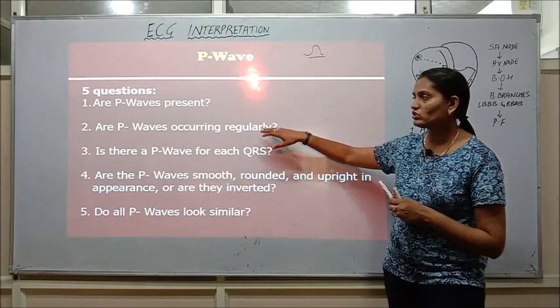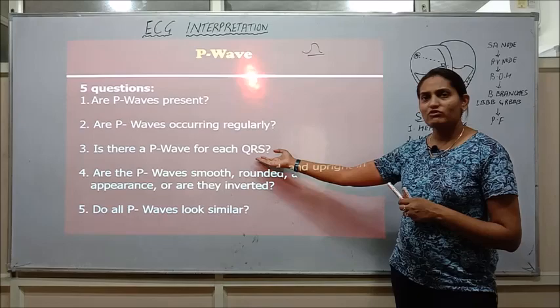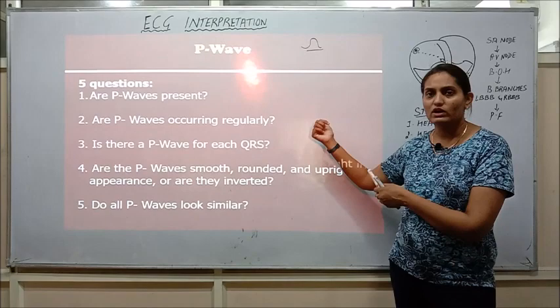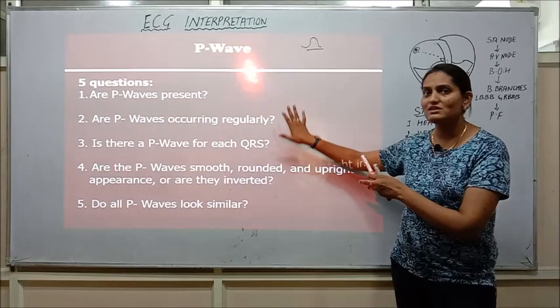Third question is is there a P wave for each QRS means there has to be one atrial contraction followed by the QRS complex that is the ventricular contraction. So there has to be a ratio of 1 is to 1 which means this is a normal ECG.